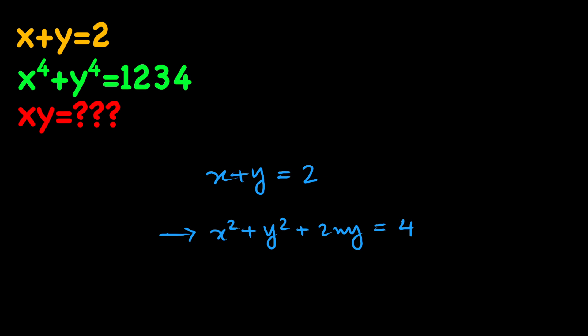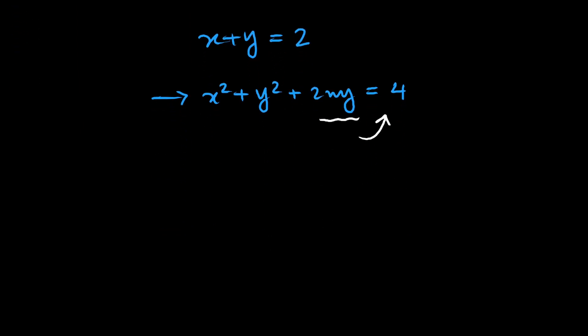Now, I need to square this again to get x to the fourth plus y to the fourth. But before that, let's move this to the right hand side. So we have x squared plus y squared equals 4 minus 2xy.